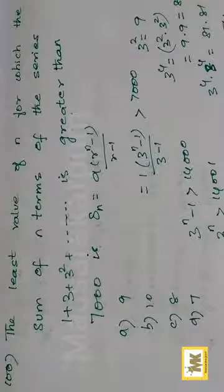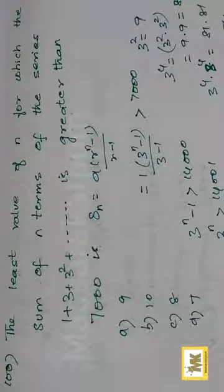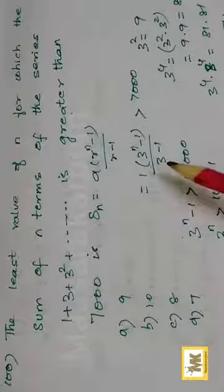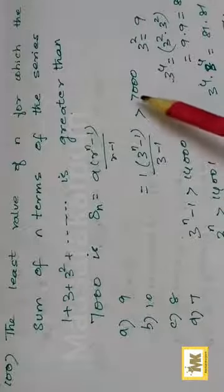S n is equal to a into r to the power n minus 1 divided by r minus 1. a is 1, r is the common ratio 3. So this is 3 power n minus 1 by 3 minus 1 greater than 7000.